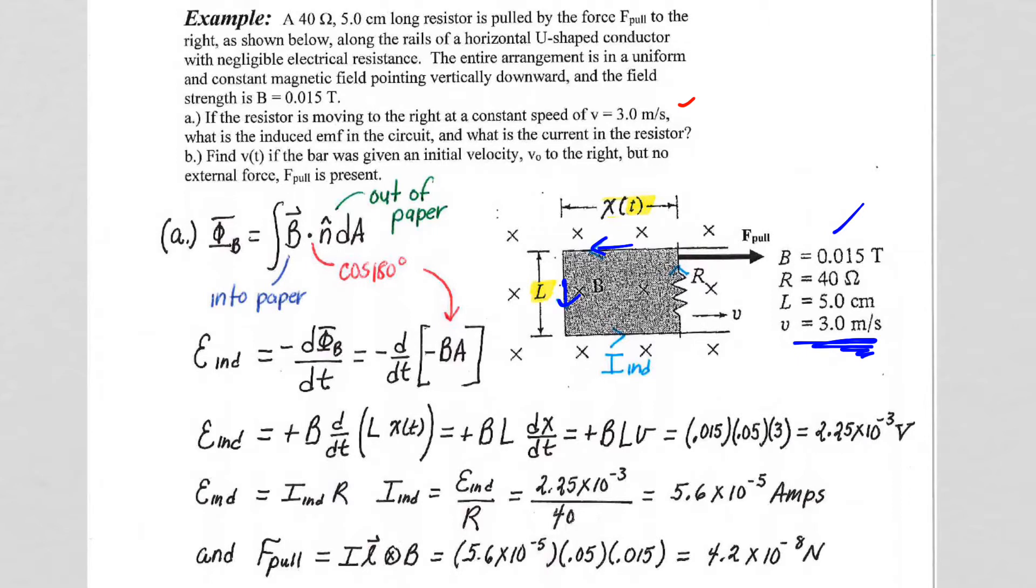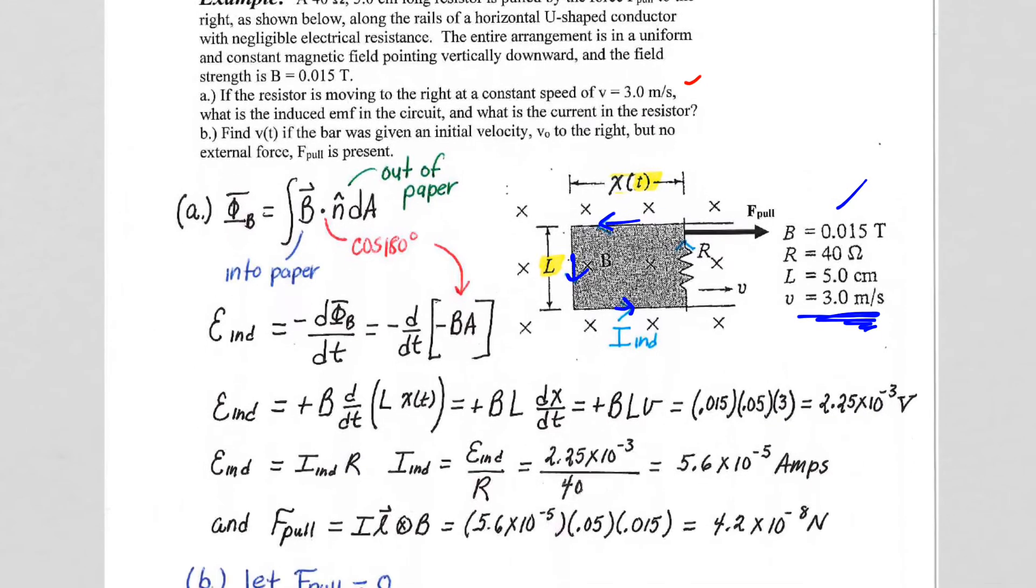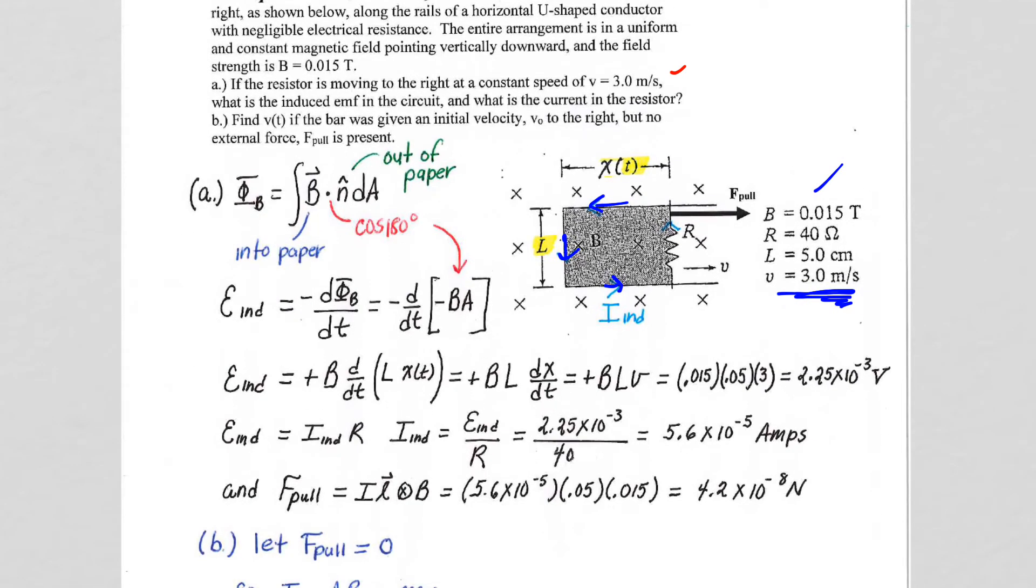So B induced is out of the paper. I induced is counterclockwise. So our flux integral B dot n hat dA becomes negative B times A. When we take negative d-flux dt, we get a positive, and that positive corresponds to clockwise. So there's our, I'm sorry, counterclockwise. There's our positive thumb out of the paper.